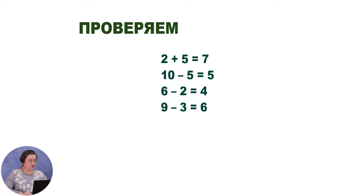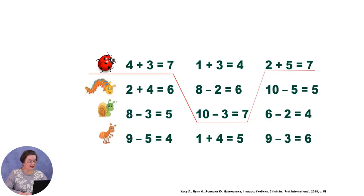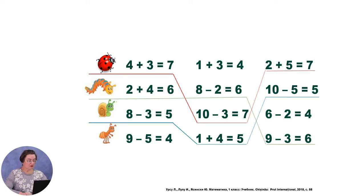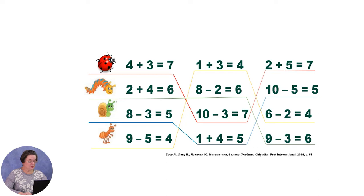Остальные примеры вы решите позже. Проложим путь каждого насекомого. Божья коровка начала свой путь от примера с ответом 7 — красным карандашом соединяем все примеры с ответом 7. Гусеница путешествует по примерам с ответом 6 — соединяем зелёным карандашом. Улитка двигается по примерам с ответом 5 — прокладываем маршрут синим карандашом. Муравей бежит через примеры с ответом 4 — его маршрут прокладываем жёлтым карандашом.